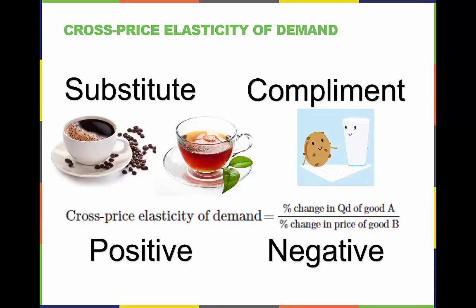What if we wanted to know if two products or services were substitutes or complements? Do economists have a tool to determine this? The answer is yes. Cross price elasticity of demand is the tool economists use to determine the relationship between the price of one product and the quantity demanded of another.